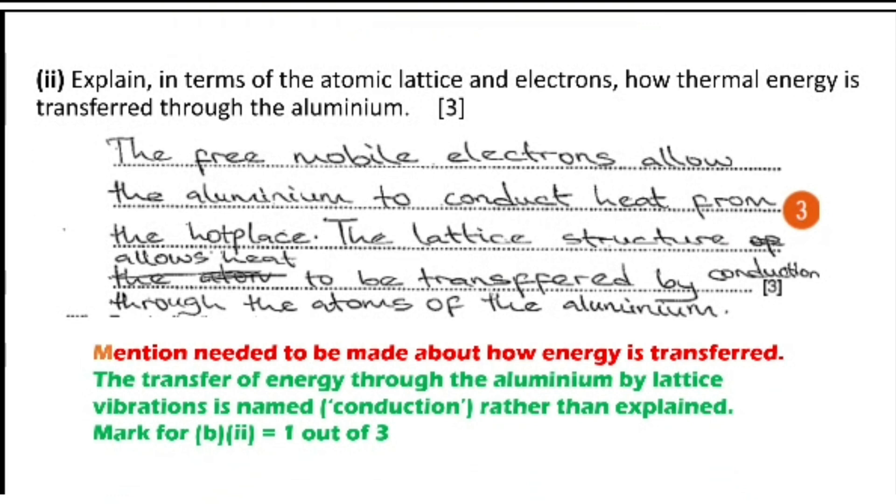Next is: explain in terms of the atomic lattice and electrons how thermal energy is transferred through the aluminum. This is one of the student responses: the free mobile electrons allow the aluminum to conduct heat from the hot plate; the lattice structure allows heat to be transferred by conduction through the atoms of the aluminum. This is a three mark question, but the student got only one mark. Why? Mention needed to be made about how energy is transferred, which is not there, and the transfer of energy through the aluminum by lattice vibration is named conduction rather than explained. For a three mark question, you need to write the proper explanation. That's why just one mark was given out of three.